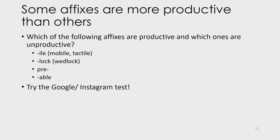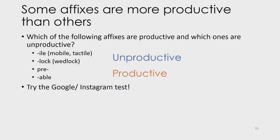The English affixes we've covered are ones we use regularly and with great ease with many different words. Not all affixes are as productive. Consider: -ile as in mobile and tactile; -lock as in wedlock; pre- and -able. Which ones are productive and which are unproductive? Try a fun test: could you use these affixes with Google or Instagram? You could say 'it's hard to imagine the pre-Google era,' and 'this is such an Instagrammable cafe.' But you wouldn't be able to use -ile or -lock in the same way — Googlelock would just be plain weird. So we can say that pre- and -able are productive, while -ile and -lock are unproductive.